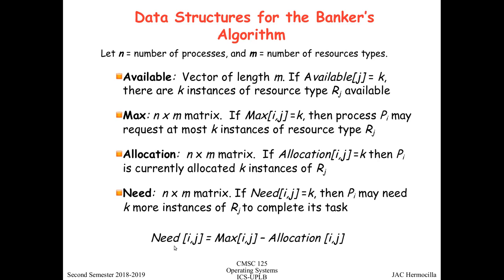Note that the need matrix is basically just max minus allocation. The max matrix contains the maximum number of instances of a resource type that process i will need, so you subtract allocation from max to get the need matrix.